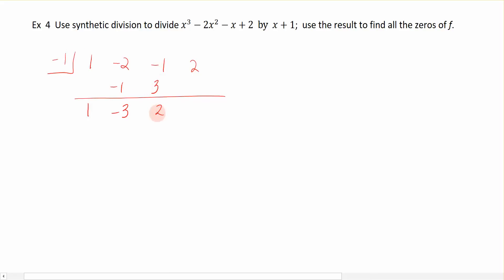Negative 1 times 2 is a negative 2. And this time, first example in all of them, I get a remainder of 0. Now that's pretty big. That says because my remainder is 0, because I have a remainder of 0, then I know x plus 1 has to be a root or a factor.